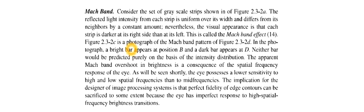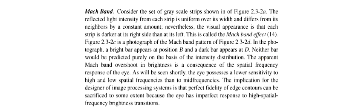In the photograph, a bright bar appears at position B and a dark bar appears at D. You will see that a bright bar appears at B and a dark bar at D — this is like a bar. You can consider this as an effect with respect to your eyes' visualization. Neither bar would be predicted purely on the basis of intensity distribution — you cannot predict it on the basis of intensity distribution alone.